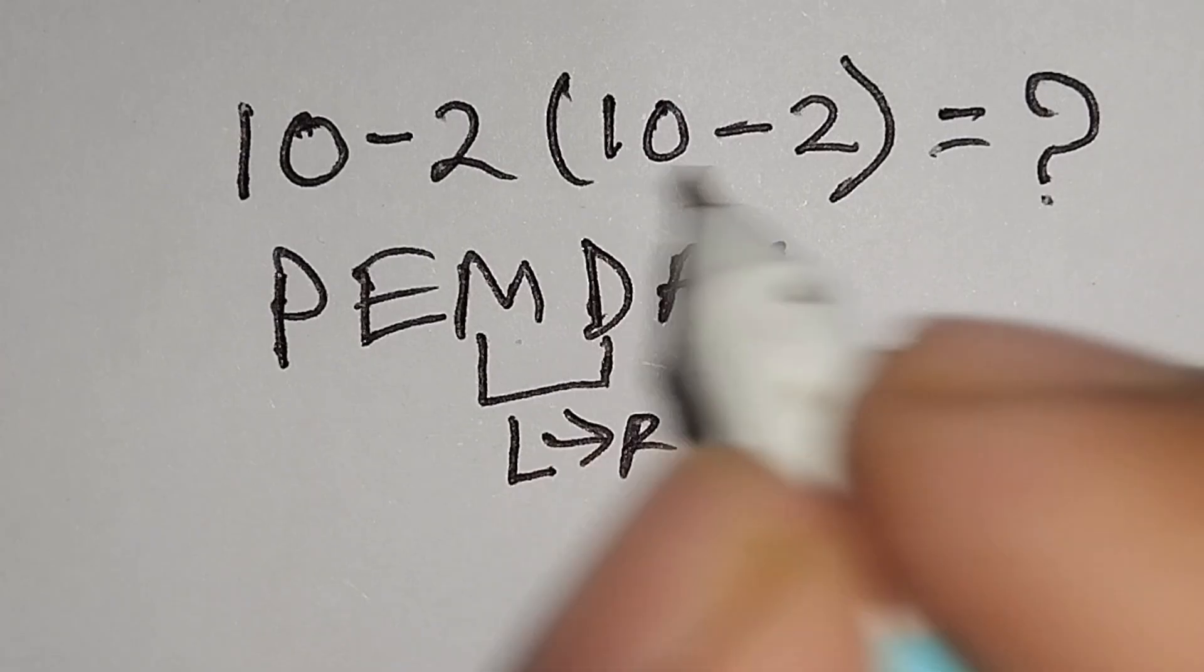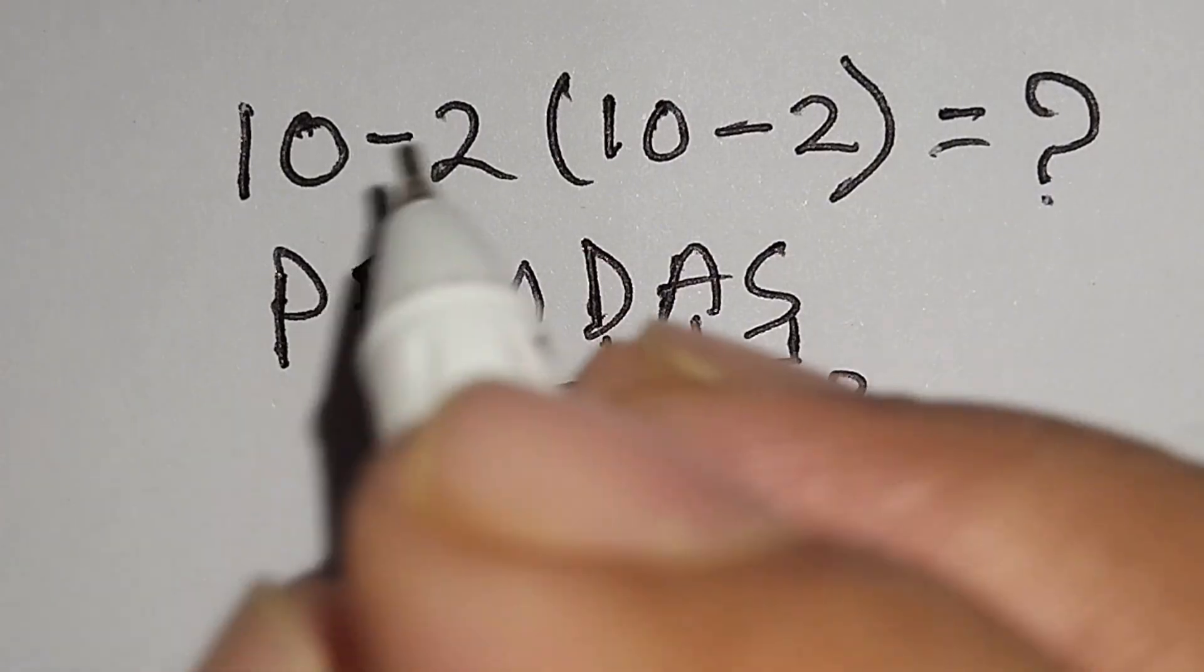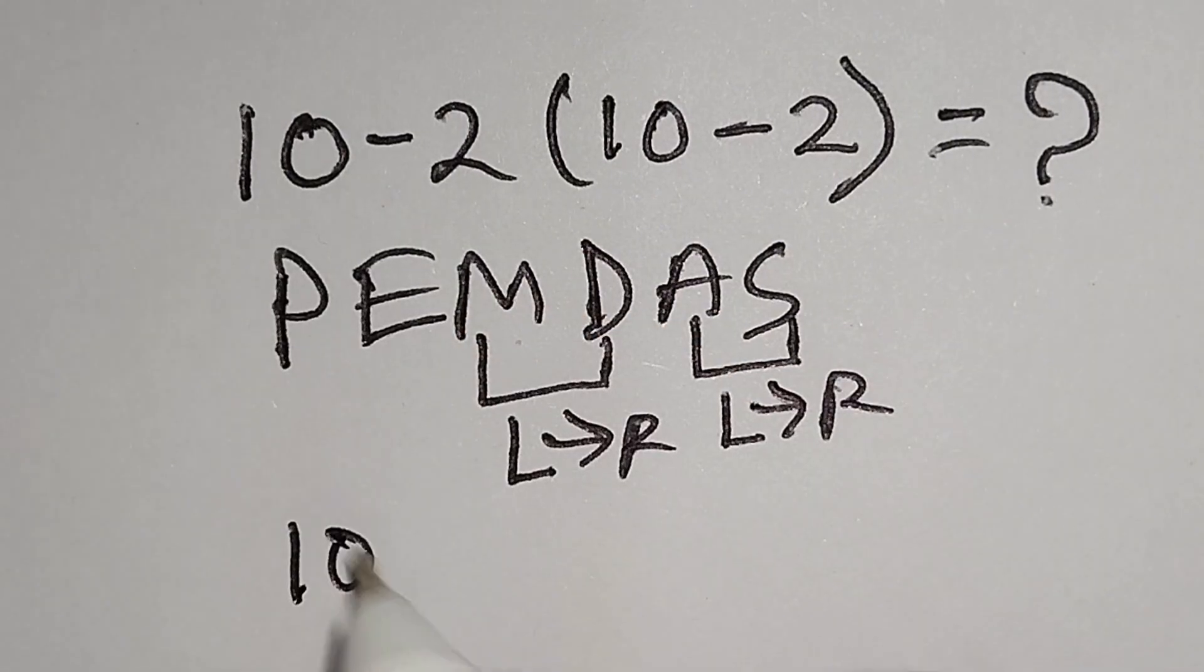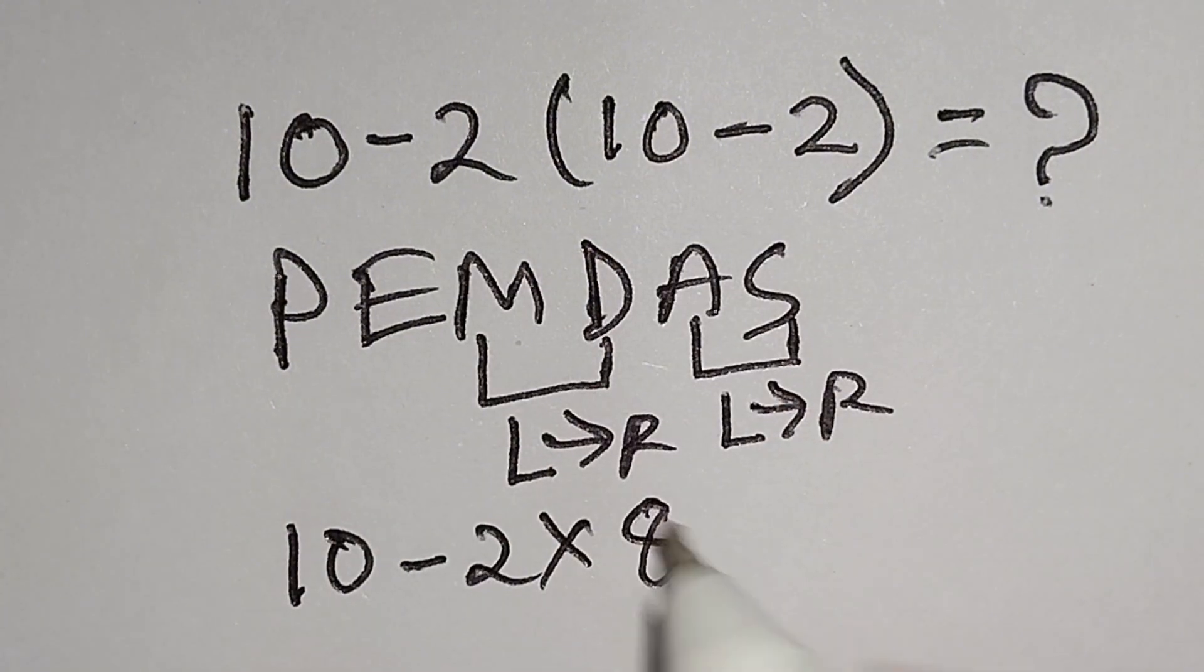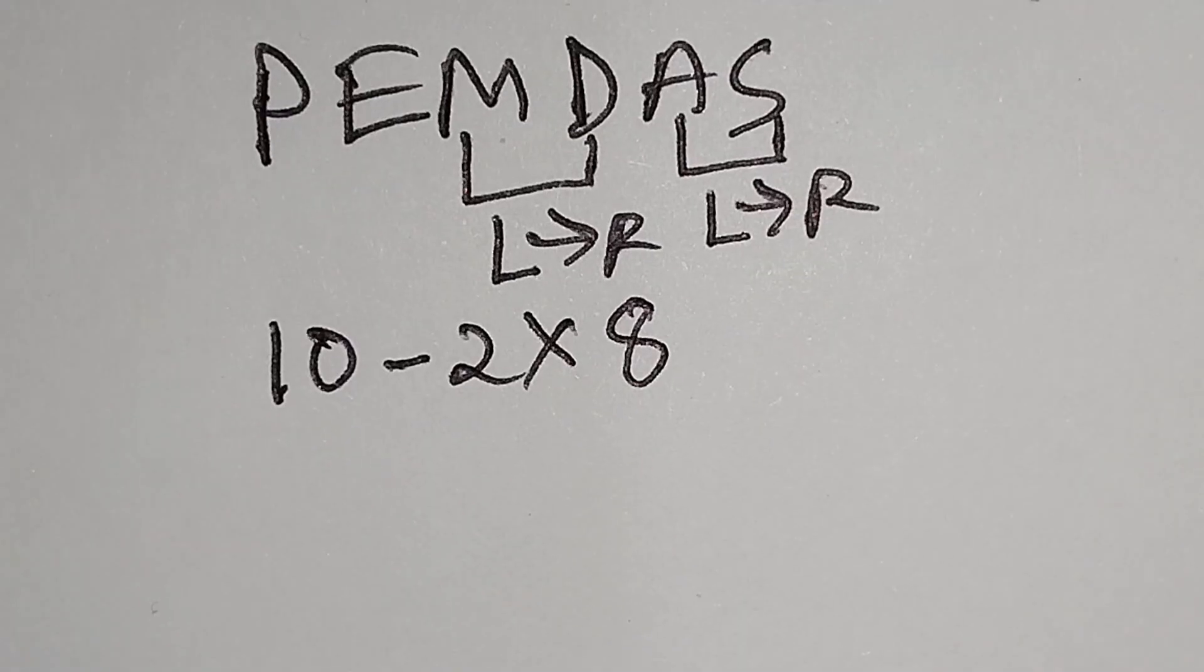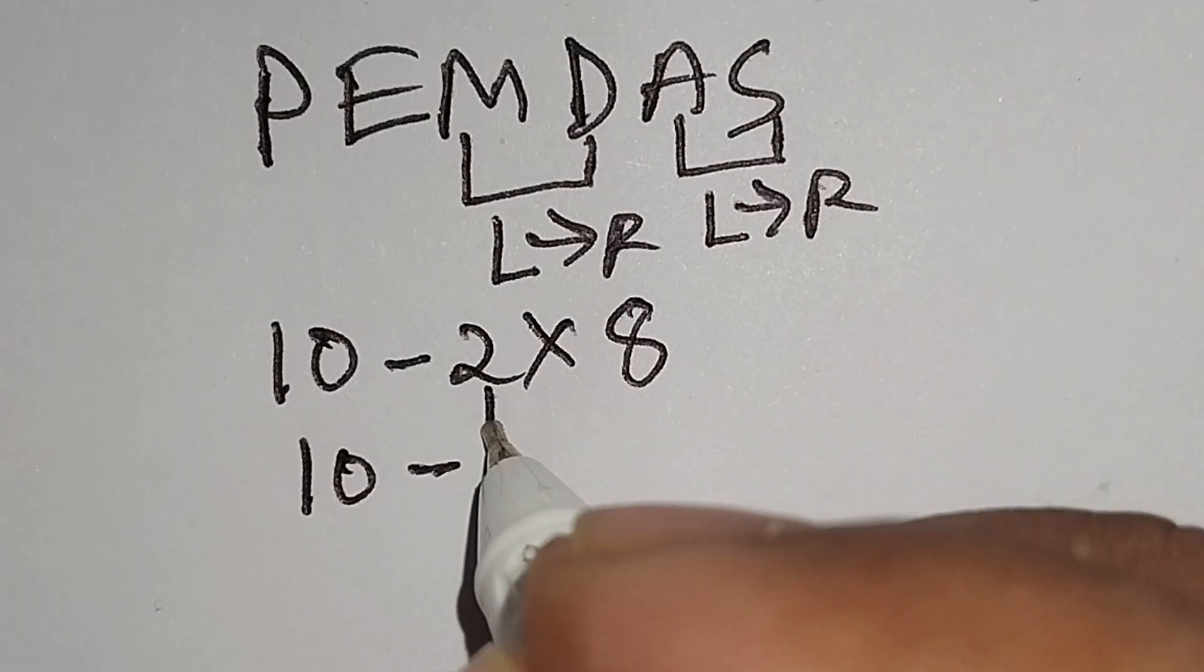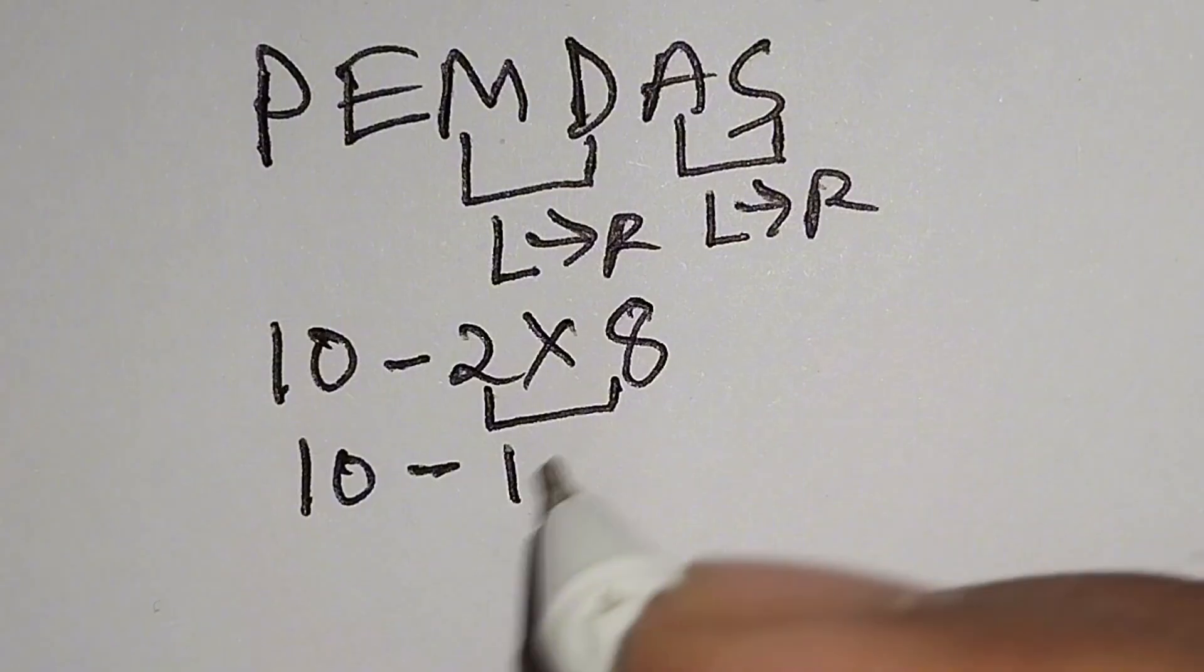Therefore, at first we have to work with this parenthesis. Here, 10 minus this 2 multiply this 10 minus 2 gives us 8. Here, this 10 minus this 2 times 8 gives us 16.